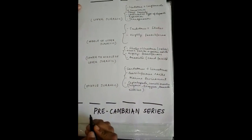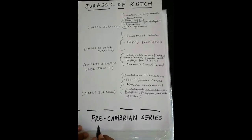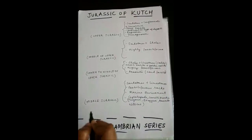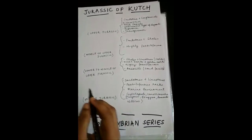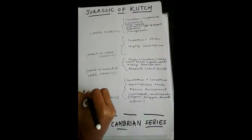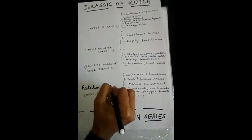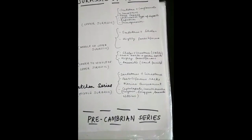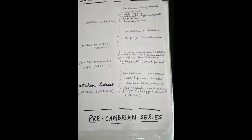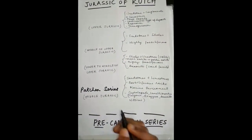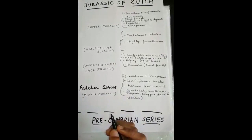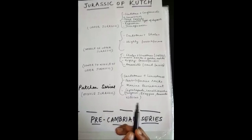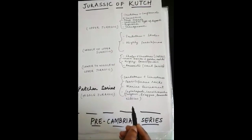Jurassic of Kutch is divided into four series. The basement rock is the pre-Cambrian series, which is overlaid by the Pachin series. The Pachin series was formed in the middle Jurassic and mainly consists of sandstones and limestones. They are highly phosphoriferous rocks formed in the marine environment, and mainly contain cephalopods and lamellibranchia such as trigonia, exogyra, ammonites, and nautiloids.